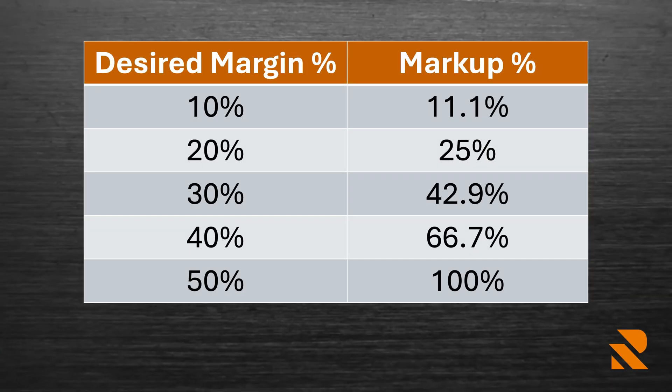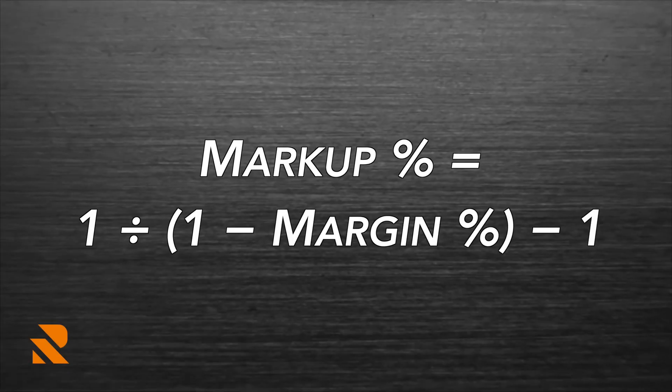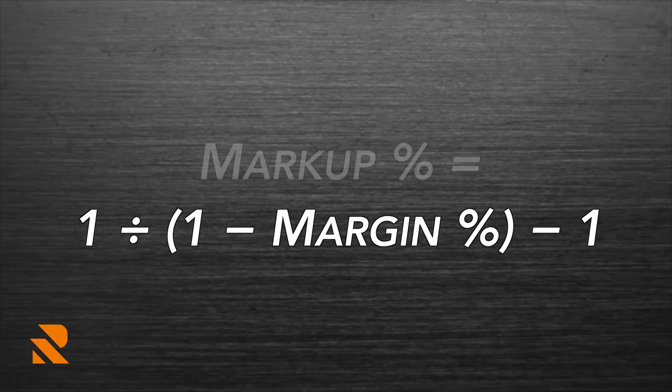The simplest way to put markup into practice is to have a table. If you're looking for 10% margin, that's 11.1% markup. 20% margin is 25% markup. 30% margin is 42.9% markup. As margin increases, markup increases quite a bit. 40% margin is 66.7% markup, and 50% margin is 100% markup. If you have your targeted margin, the formula to generate your targeted markup is: 1 divided by (1 minus your margin percent), minus 1. That equals your markup.